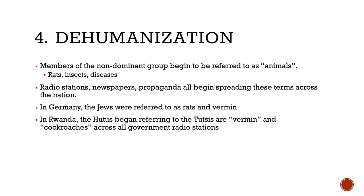Stage four is dehumanization. Members of the non-dominant group begin to be referred to as animals. Terms like rats, insects, or different diseases spread through radio stations, newspapers, and propaganda. In Germany, Jews were referred to as rats and vermin. In Rwanda, Hutus began referring to Tutsis as vermin and, more famously, cockroaches — spread across all government radio stations.